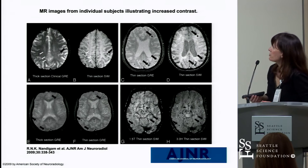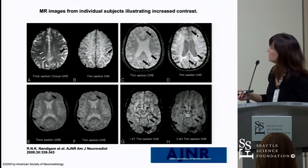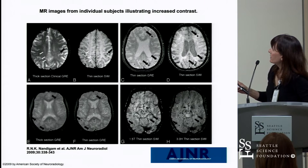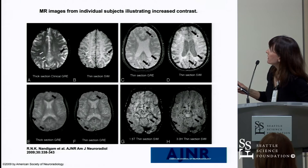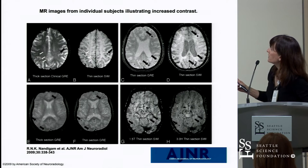Here are MRI images showing the difference in sensitivity. In the upper left is a gradient echo image with a few microbleeds that are hard to see, but right next to it is the susceptibility-weighted image in the same patient, and the black dots are much more easily identified on the susceptibility-weighted images.